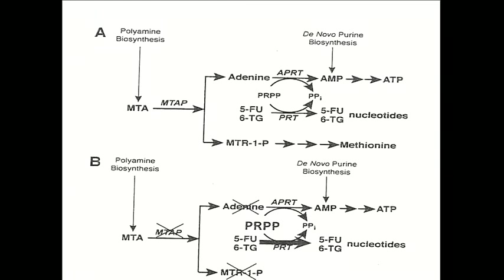The rationale is that in the presence of methylthioadenosine phosphorylase, if one gives methylthioadenosine, you load up cells with adenine. Consequently, there's a higher concentration of adenosine in cells, which uses up PRPP, leaving less available for conversion of 6-thioguanine or fluorouracil into nucleotides. So MTA pretreatment decreases the nucleotide formation and cytotoxicity of these drugs.